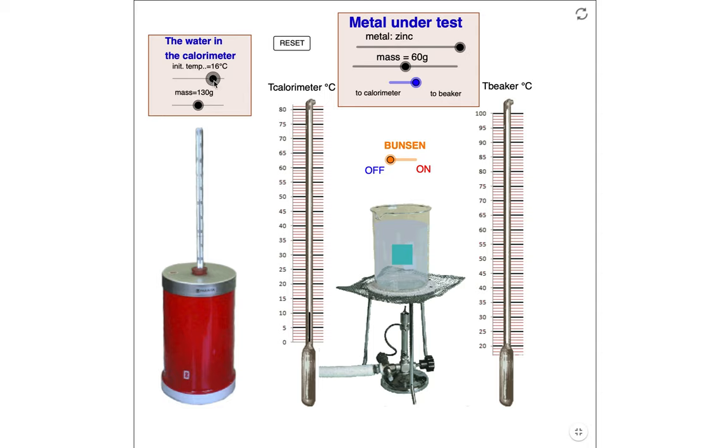Once we get the temperature set for the value we want, we notice that the thermometer on the left which records the temperature of the water inside the calorimeter hasn't really changed. But if I hit reset, then that adjusts that thermometer reading to read what the initial temperature of the calorimeter is. This is 17 degrees.